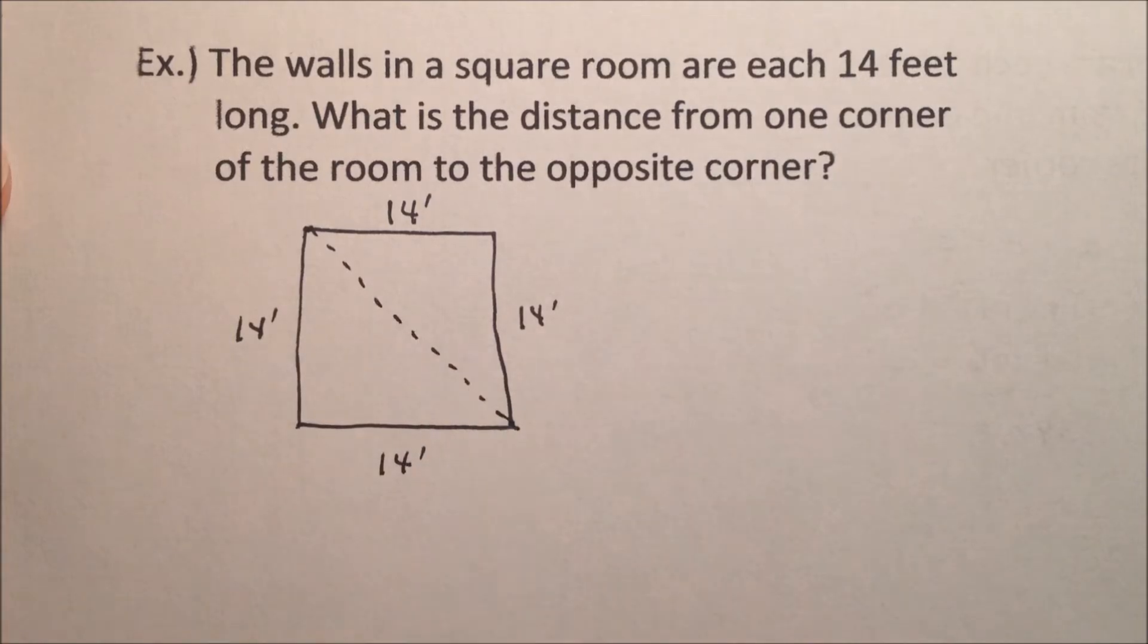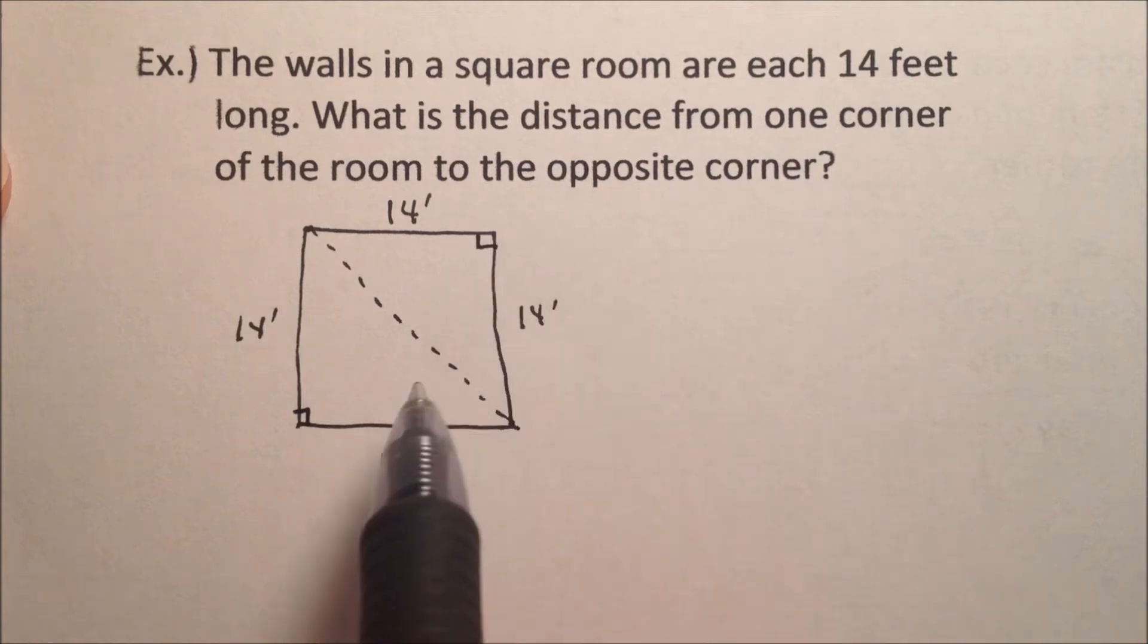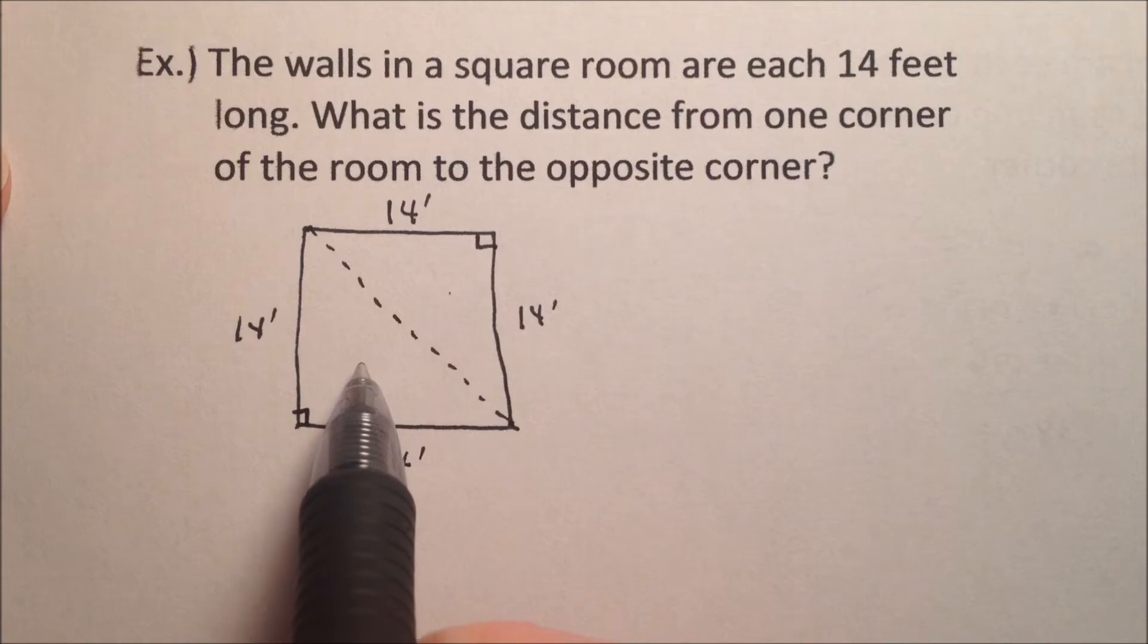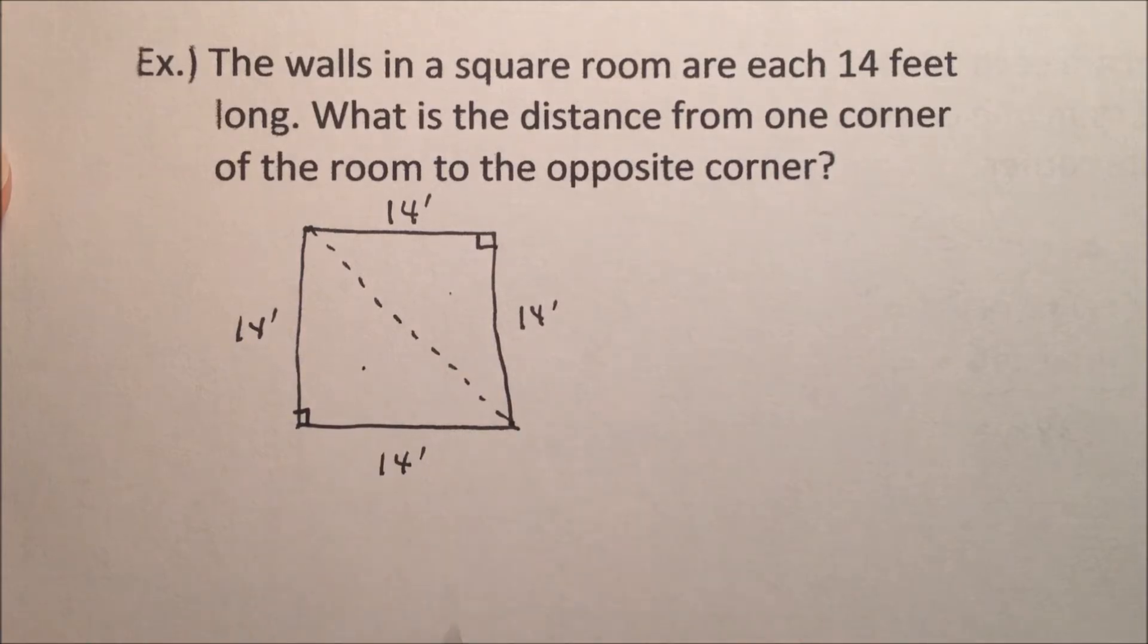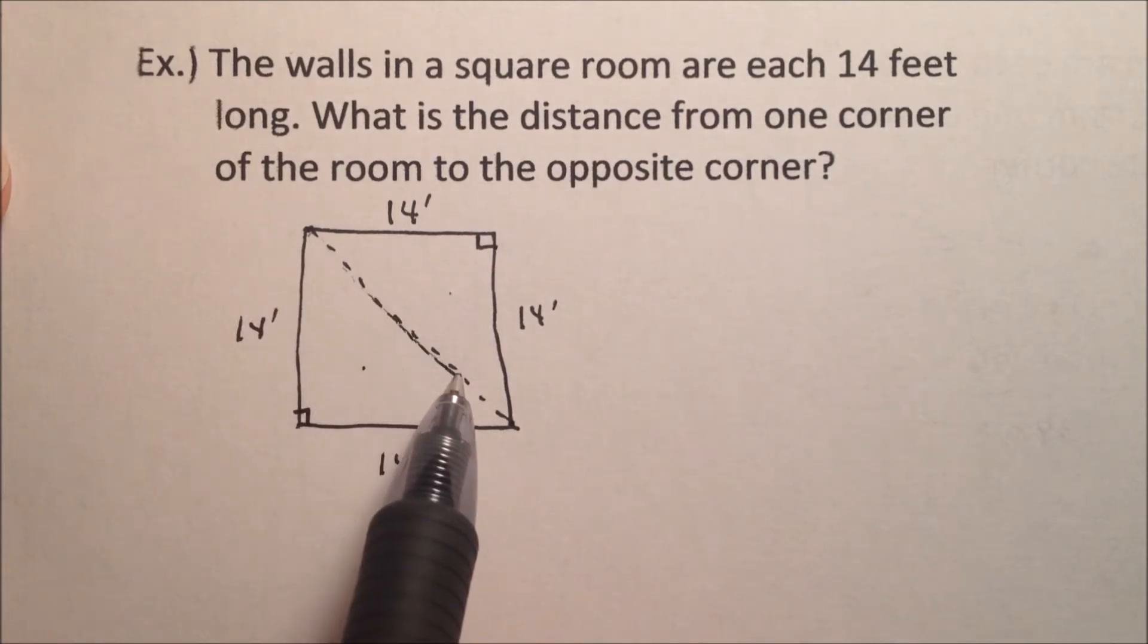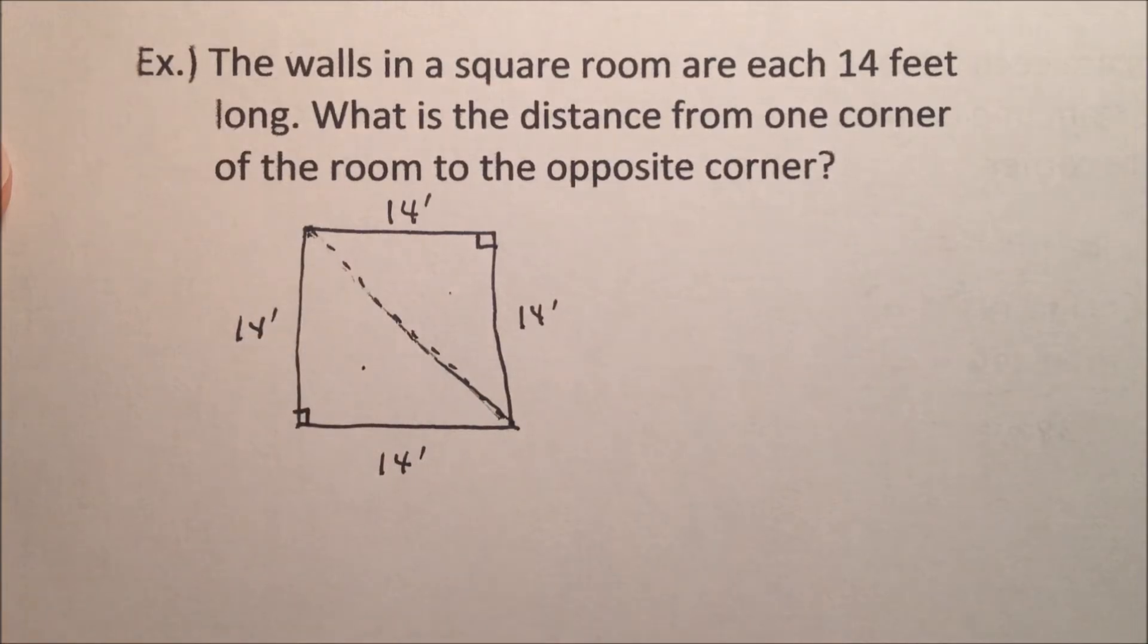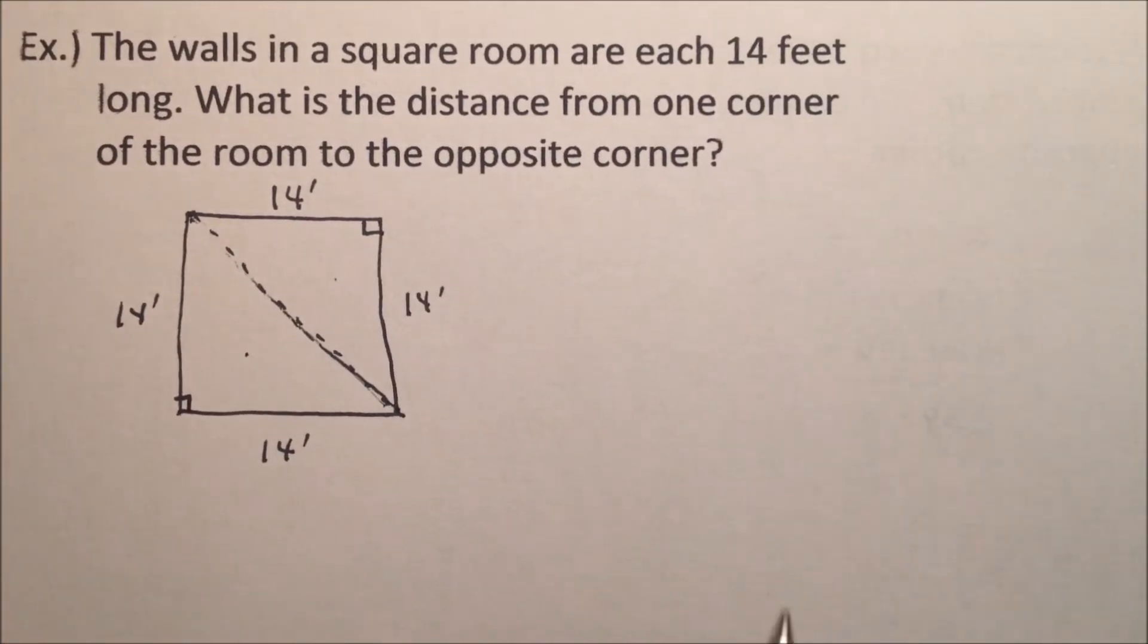Okay, well, it looks like since it's a square, we've got right angles all the way around, which means we've got a right triangle up here and a right triangle down here. So if we're going to be solving for this length of the opposite corner to the other corner, that's going to be a nice right triangle. And that's going to be the hypotenuse.